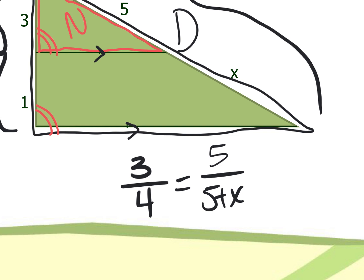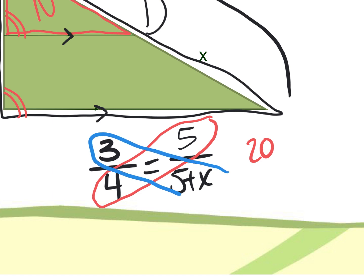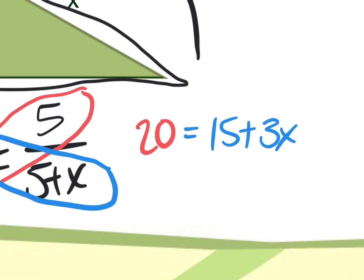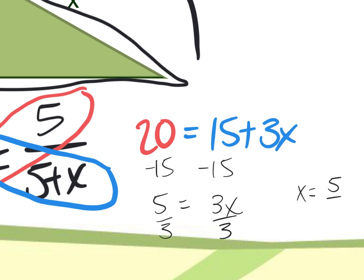This is just a standard cross multiplication problem. Five times four is 20, and three times five plus x gives 15 plus 3x. Then it becomes an algebra problem — Veronica, go for it. Subtract 15 — you get five equals 3x. Then divide by three. We're cool leaving it as five thirds. That's it — we found the value of x.